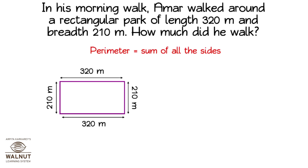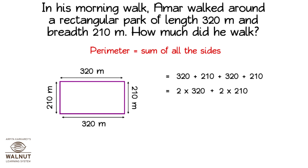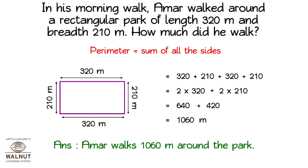Perimeter is equal to sum of all sides. It is equal to 320 plus 210 plus 320 plus 210, which is equal to 2 into 320 plus 2 into 210, which is equal to 640 plus 420, which is equal to 1060 meters. The answer is Amar walks for 1060 meters around the park.